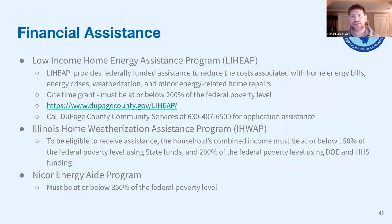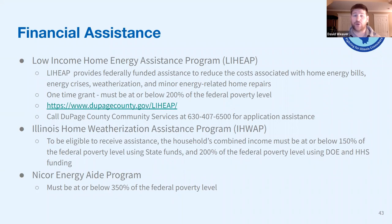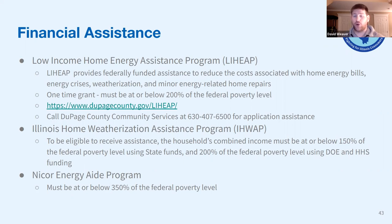Just a quick note on financial assistance — even if it doesn't apply to you, you might know someone it can help. LIHEAP (the Low Income Home Energy Assistance Program) is a fantastic program for people struggling to pay groceries and keep the heat on — it provides federal grants to pay for heating. There's also the Illinois Home Weatherization Assistance Program, for households at 200% of the federal poverty level, which provides funds to make home energy improvements showing long-term monthly savings. NICOR also has a program, though it has stricter eligibility requirements.